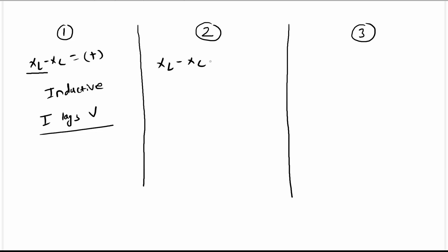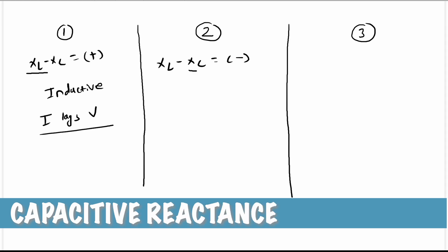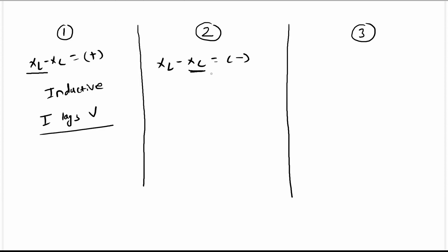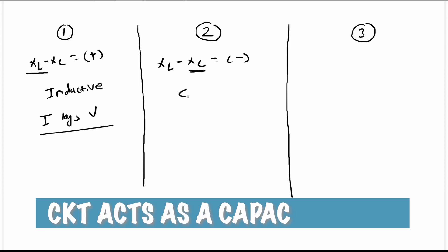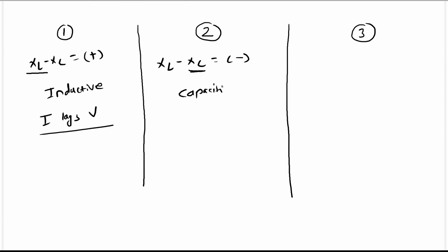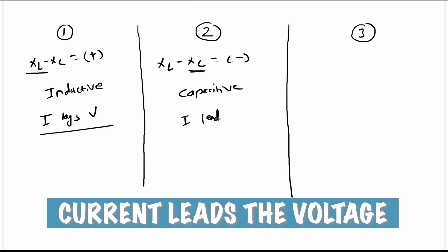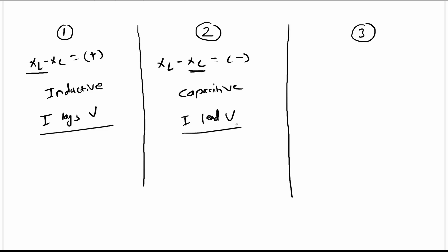The second condition is if the value of XL minus XC is equal to a negative number — that means XC is more dominant than XL. As a result the number will be negative, and in that case the RLC circuit acts as a capacitive circuit, and in such a circuit the current will lead the voltage.